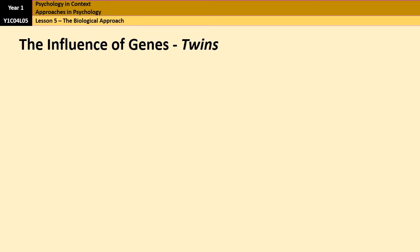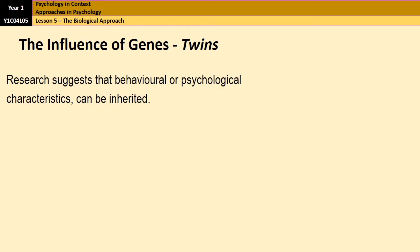When it comes to conducting research on the influence of genes, biological psychologists very often use twins because twins share either 100% of their DNA or 50% of their DNA. A lot of research from twin studies has suggested that behavioural and psychological characteristics can be inherited. The way they usually do it is by comparing the concordance rate of monozygotic twins — identical twins — and concordance rates of dizygotic twins, which are non-identical twins. A concordance rate is a degree of similarity.